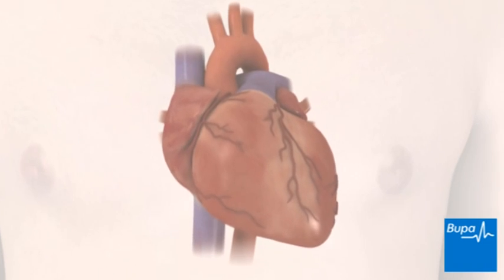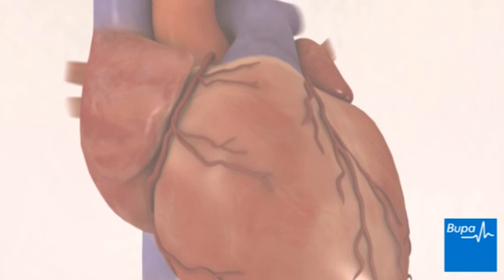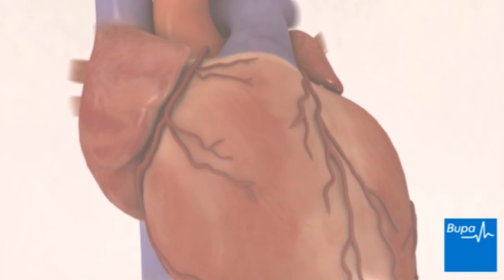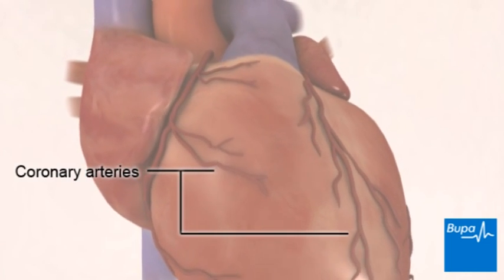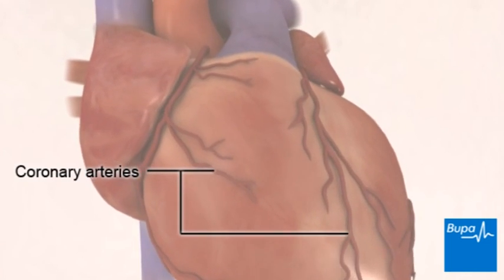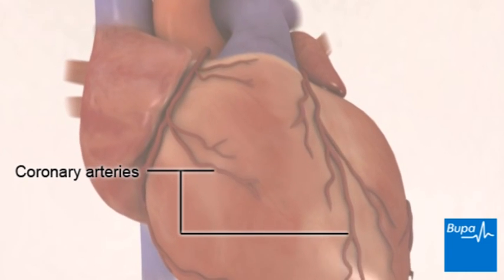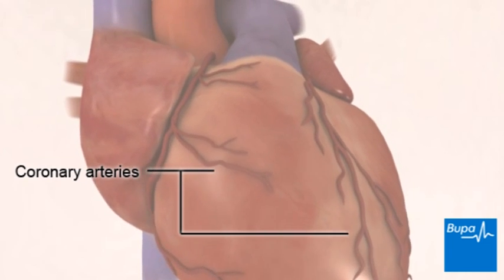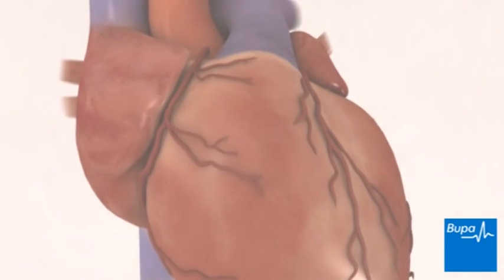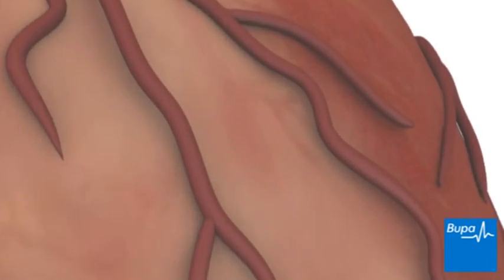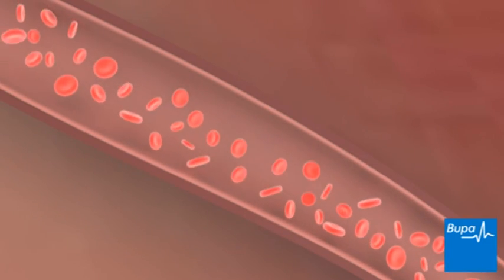The network of blood vessels that branch over the surface of the heart are called the coronary arteries. Atherosclerosis can happen in any part of the coronary arteries, which supply the heart with blood.